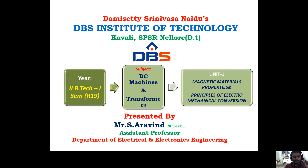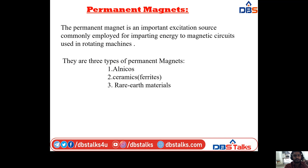I will start with the permanent magnet concept. The permanent magnet is an important excitation source, commonly employed for imparting energy to magnetic circuits used in rotating machines. There are three types of permanent magnets: one is Alnico, the second is ceramics or ferrites, and the third is rare earth materials.